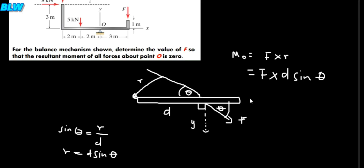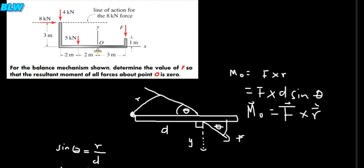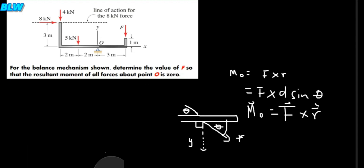To find the moment using the vector approach, moment equals the cross product of the force vector and the position vector r. When you use this method, you are using the vector approach to solve for moment. Taking the cross product of these two vectors gives you both the magnitude and the direction of the moment. With this knowledge, let's go ahead and solve some questions.